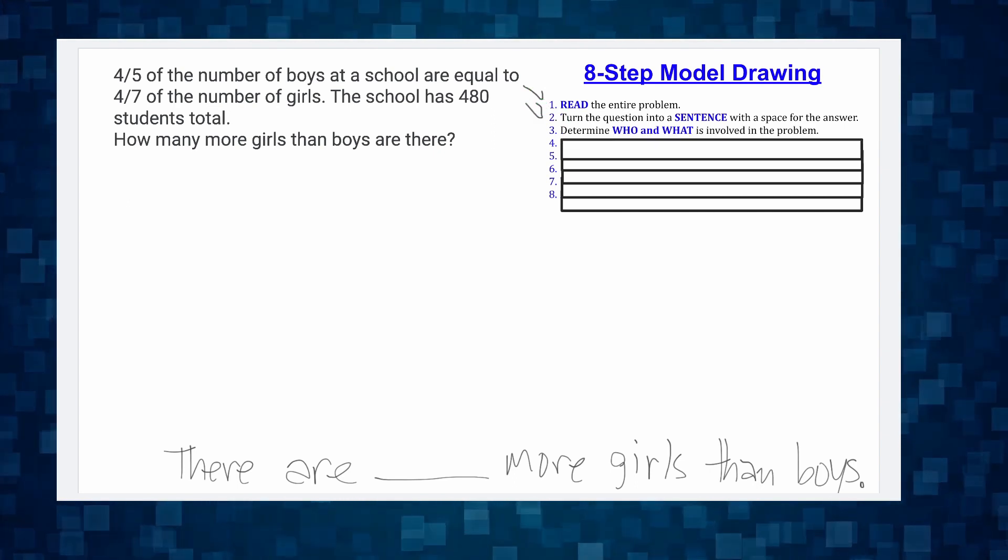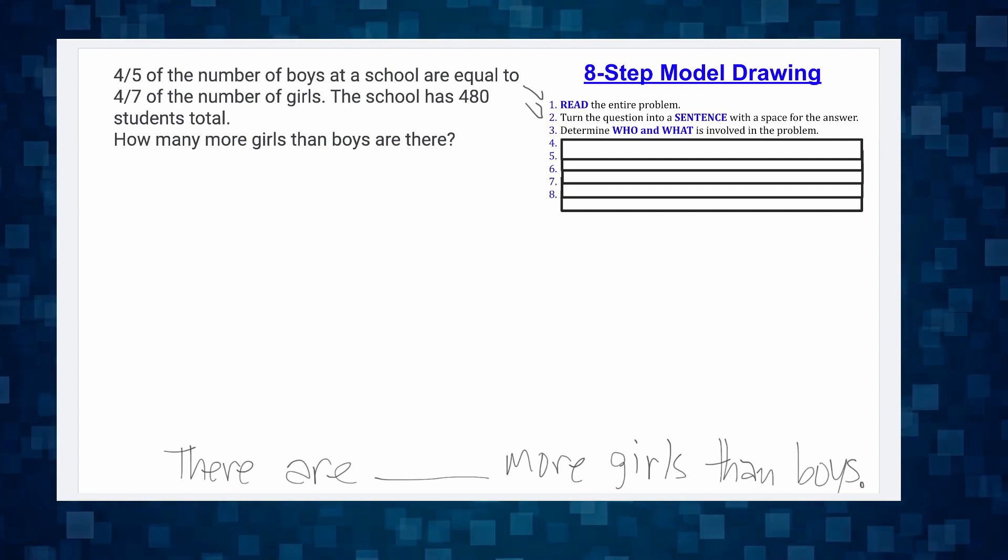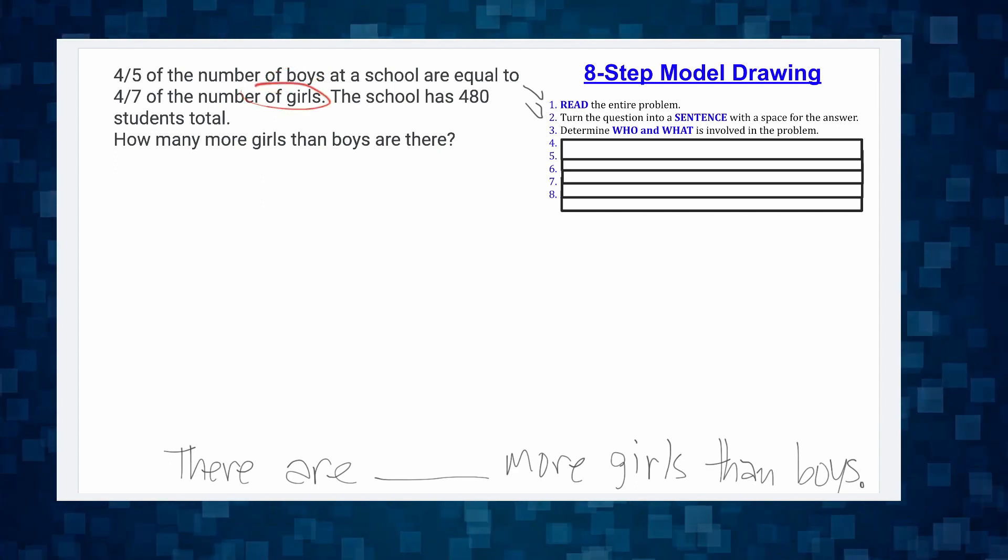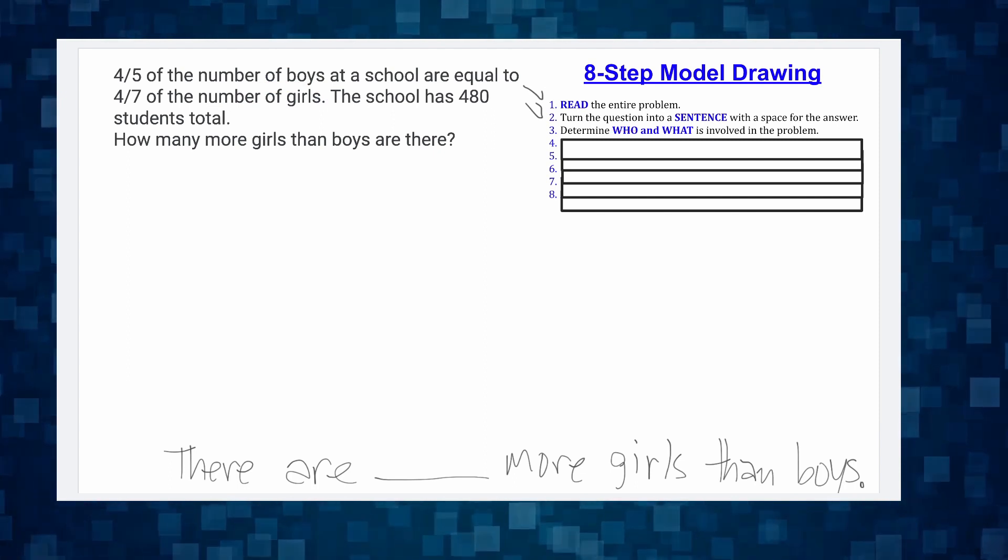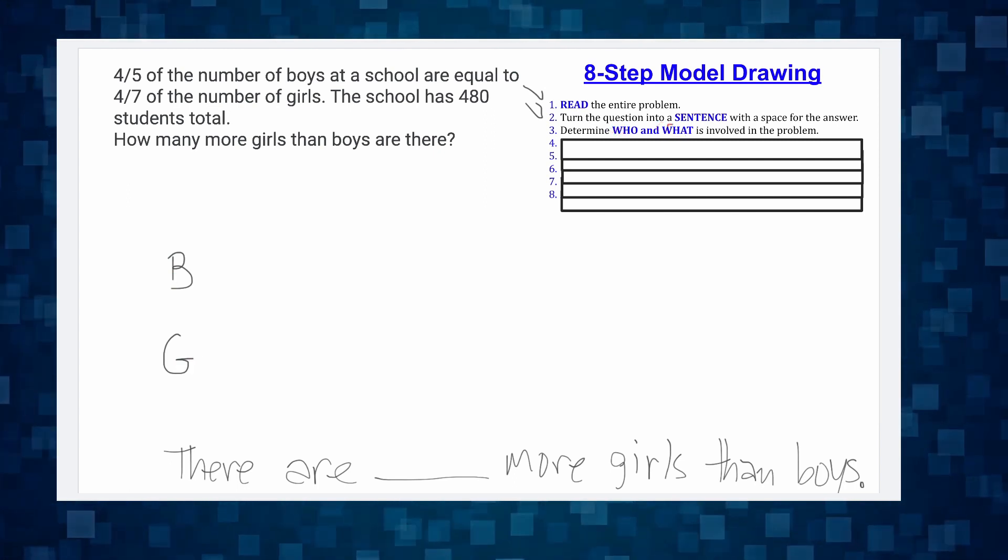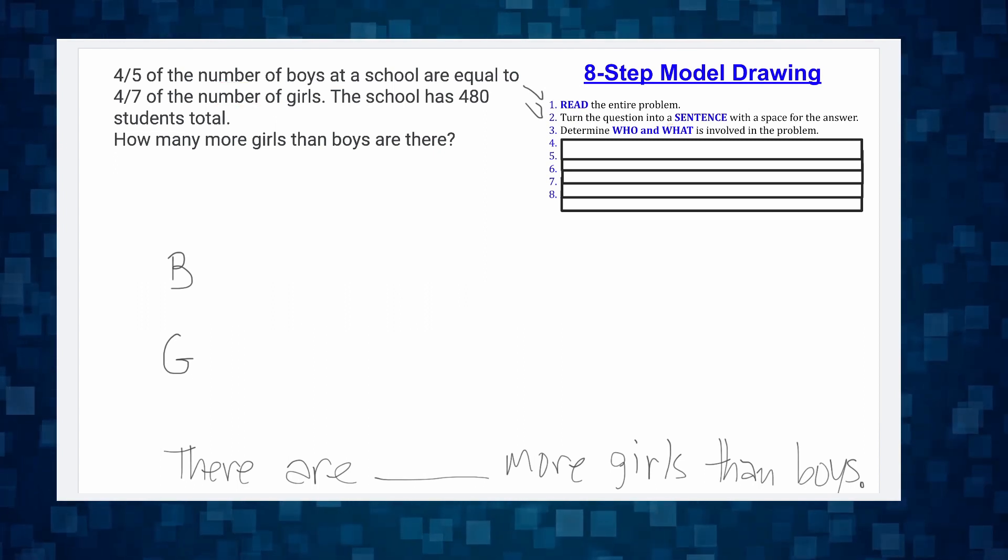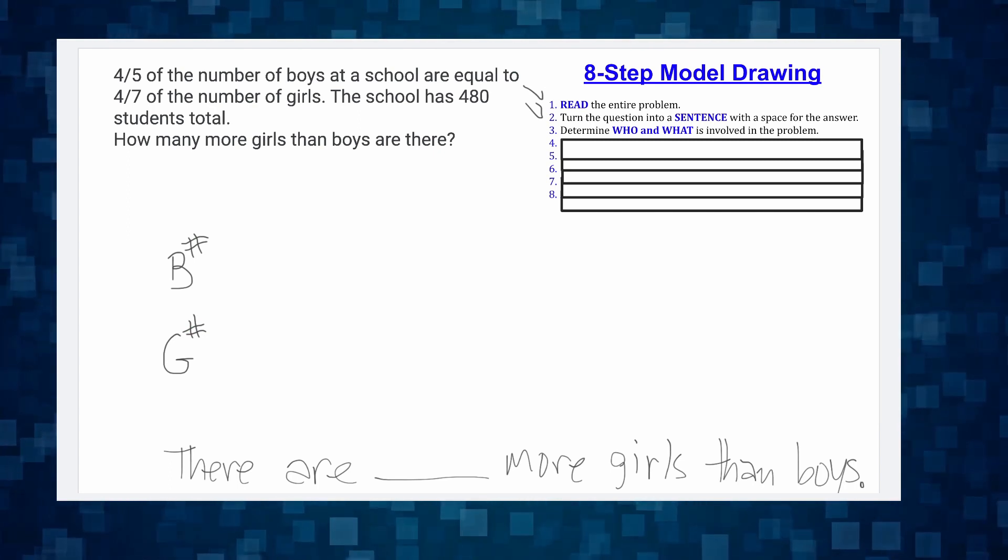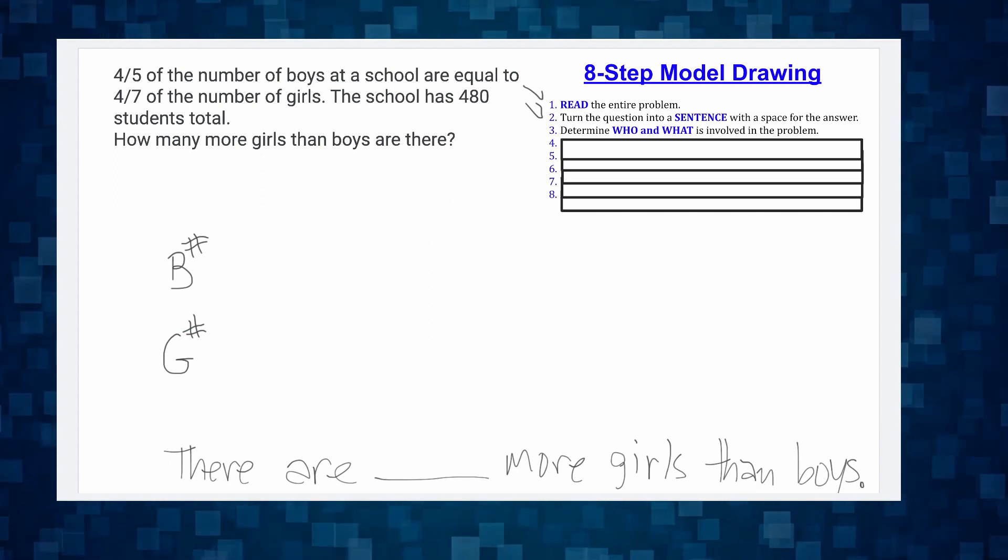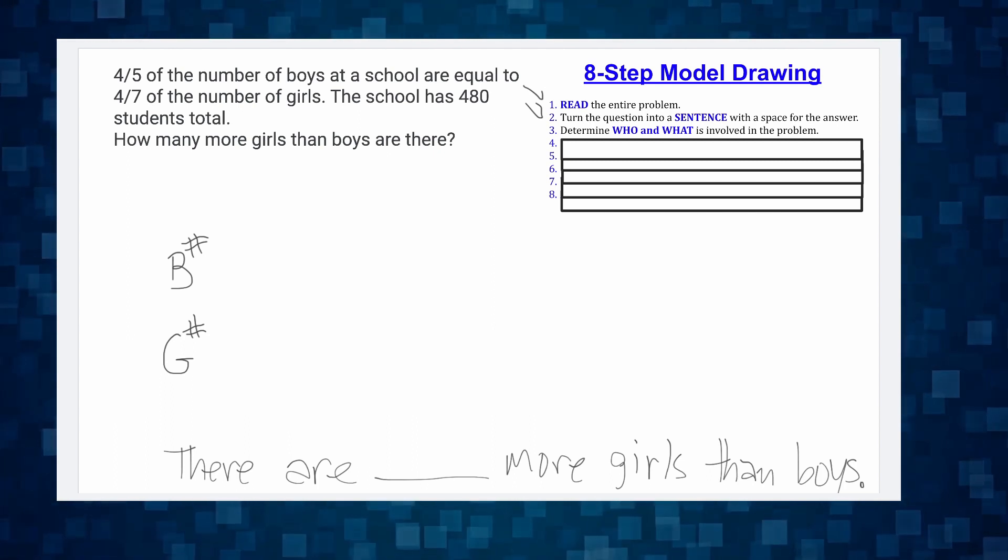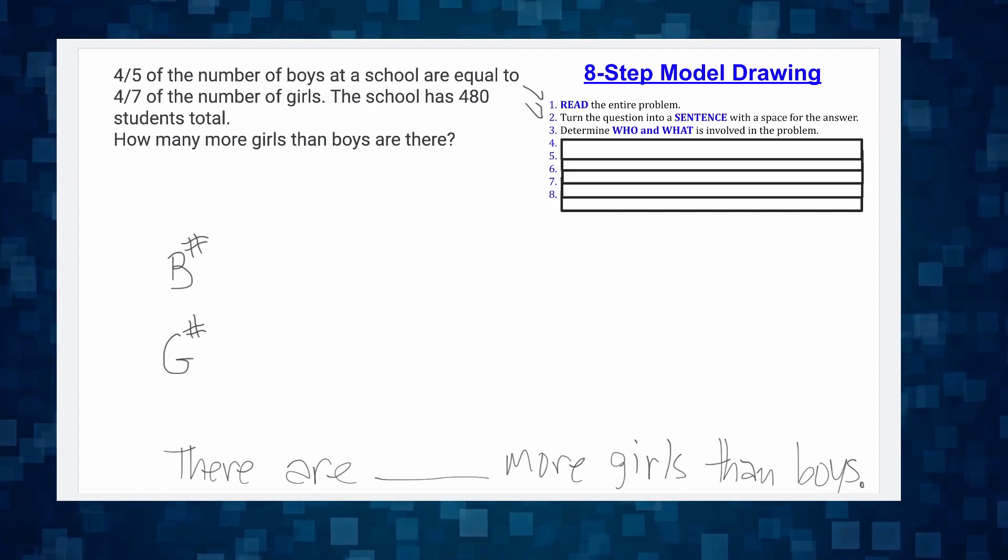Now step three. Step three is determine who and what is involved. Well, it says four-fifths of the boys are equal to four-sevenths of the girls. So who's involved? Boys and girls. So I'm going to put boys and girls. And then it says, what is involved? Well, the who is the boys and the girls. What is it? It's the number of boys and the number of girls. So I'm just going to kind of put a number sign. That's just the number of boys and the number of girls. Other word problems, we might be talking about pounds if we're talking about the weight of things, or we might be talking about dollars or toys. That's step three. We are done.